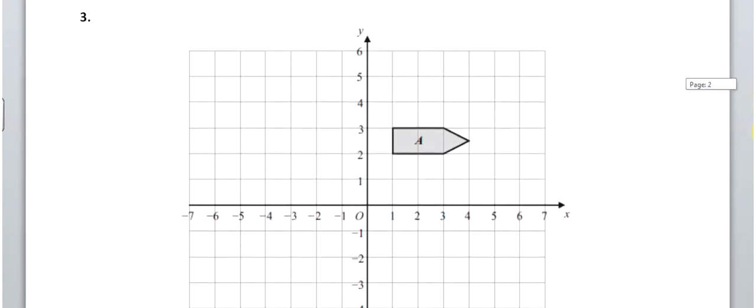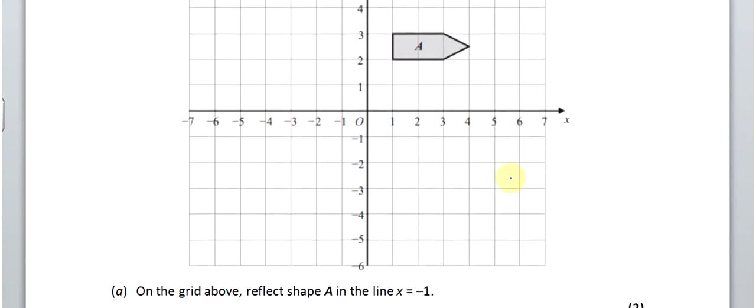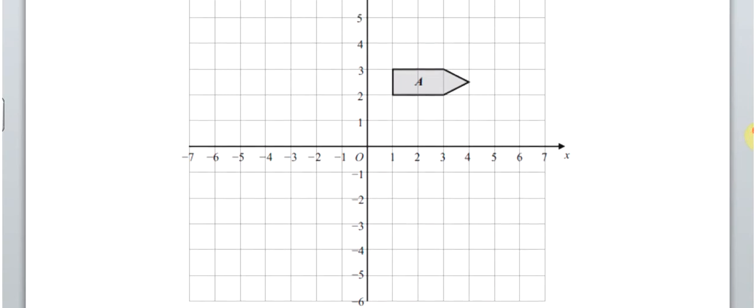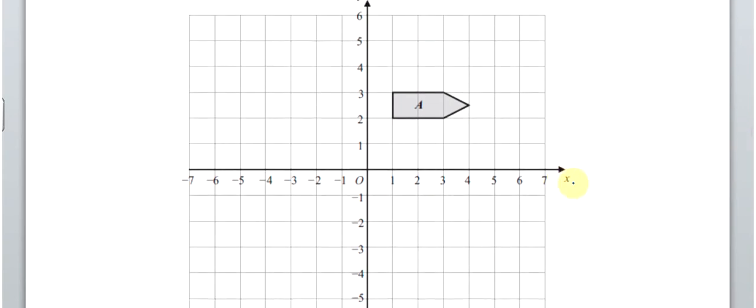Okay. Slightly harder stuff now. Bit of transformations. We're going to reflect shape A in the line x equals minus 1. So first of all, we find x equals minus 1. So here's x. There's minus 1. And it's a line, remember. And it's this line here.